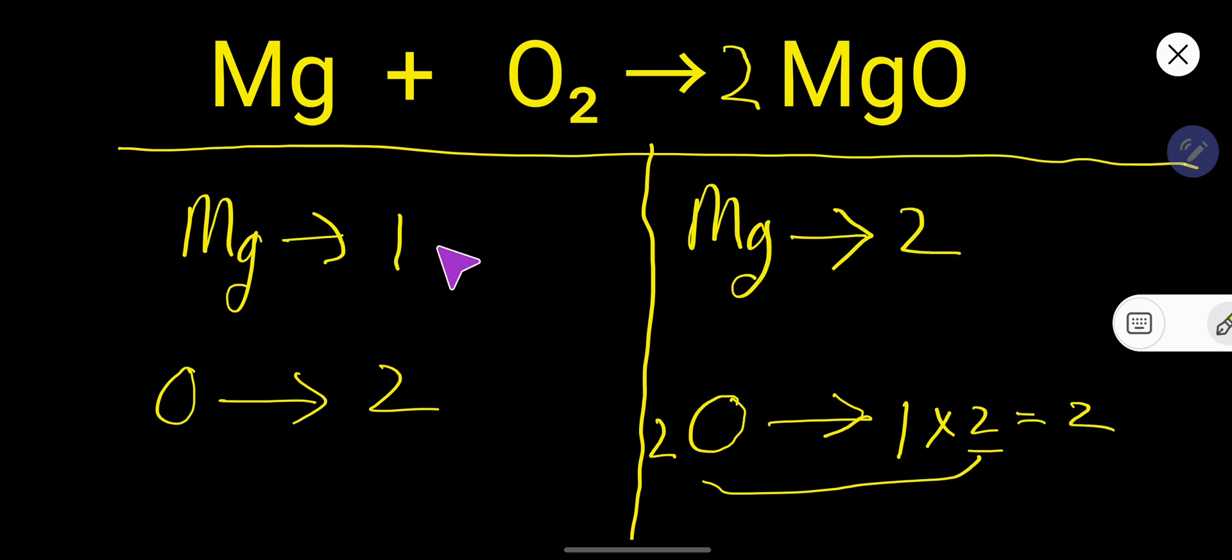Here 2, here 1. So what you can do, you can multiply here by 2, that gives you 2. If you multiply by something, that something must come before the atom, that is here. Now 2, 2, 2, 2, everything is balanced.